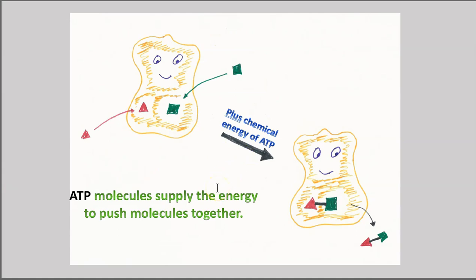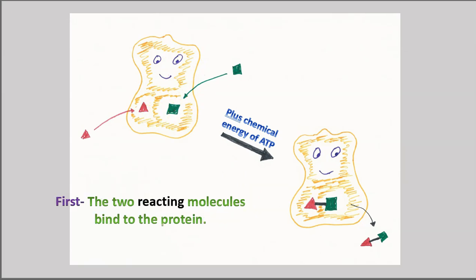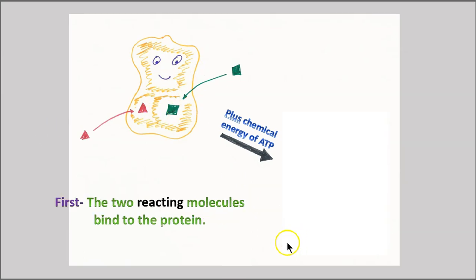And that's where ATP comes into play. ATP supplies the energy so that this protein can do its muscular work. So here we go. First, the two reacting molecules bind to the protein. There are two binding sites for just these two molecules. Not any old molecules can bind there, just these two. That's what makes for the specificity of proteins. They only do certain chemical reactions because they can only bind certain target molecules.